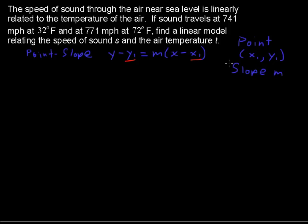Well, we have two points, so we'll just use one of those points and we can find the slope. First of all, I'm going to rewrite this in terms of S and T because that's what we're using here. So S is our dependent variable and T is our independent variable.